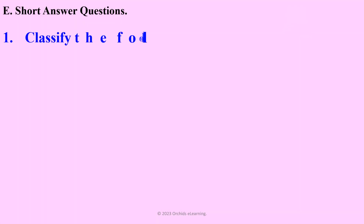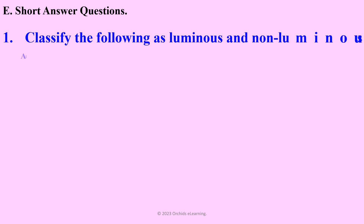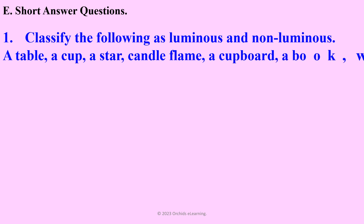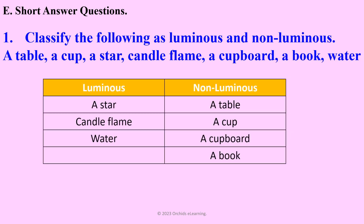Short answer questions. Classify the following as luminous and non-luminous. Luminous: a star, candle flame, water. Non-luminous: a table, a cup, a cupboard, a book.